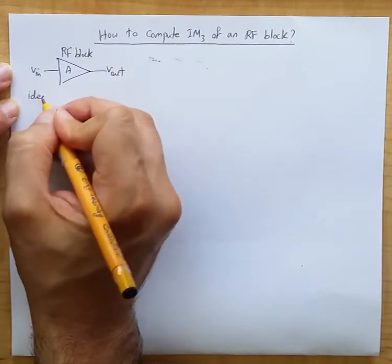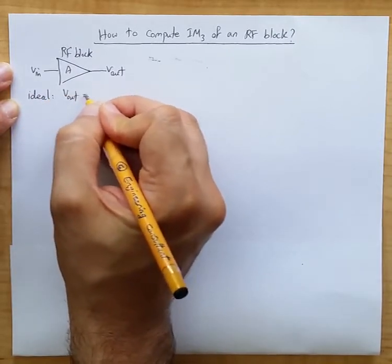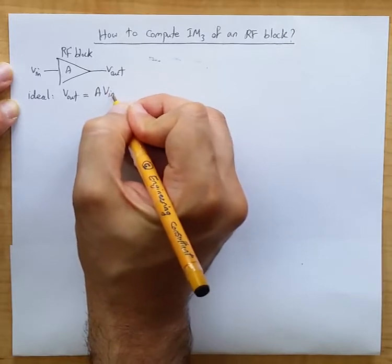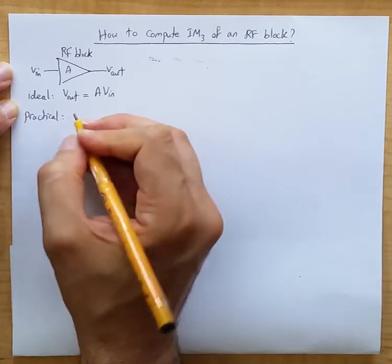The ideal relationship between V in and V out is V out equals A times V in. In practice, because of non-linearity of this RF block,